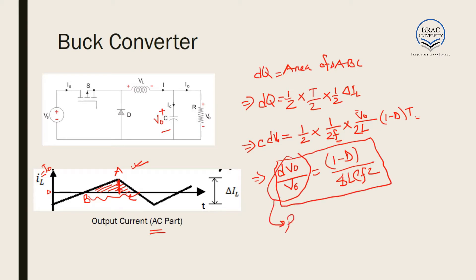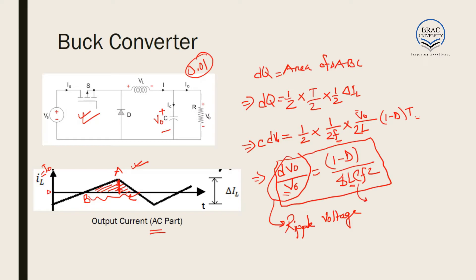The parameter dV_0/V_0 is called the ripple voltage. So if we want to design a buck converter for which the ripple voltage is, say, 0.01, we already know the inductor calculation, duty cycle, and frequency. Using the formula, we can solve for the filter capacitance value needed to achieve the specified ripple voltage.